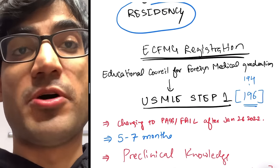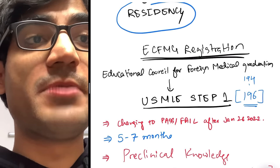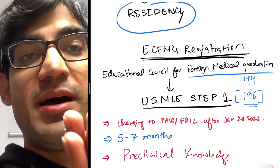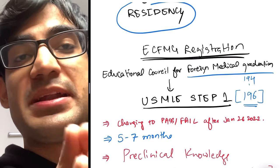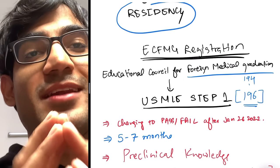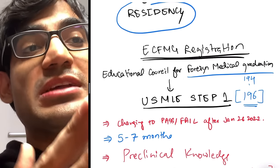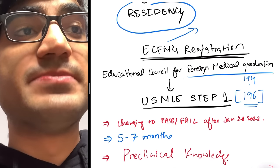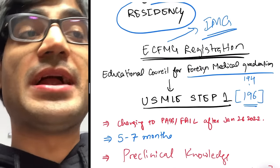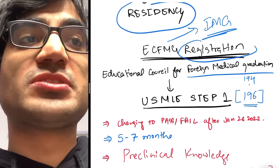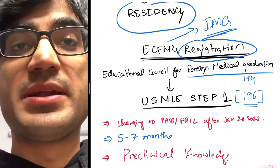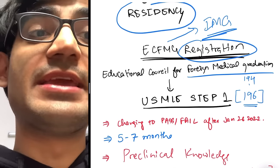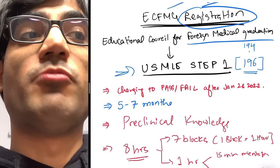The whole process of USMLE starts with something called ECFMG registration. ECFMG stands for Educational Council for Foreign Medical Graduates. This council allows us to participate in the whole match and become a doctor — it helps international medical graduates practice medicine in the US. You have to get registered and fill something called Form 183. Once you fill Form 183, you'll be eligible to write USMLE Step 1.